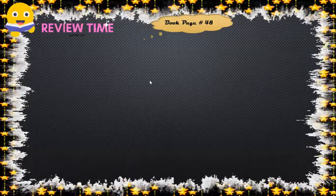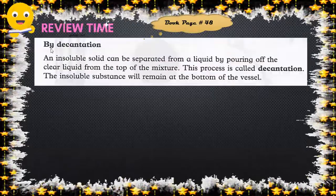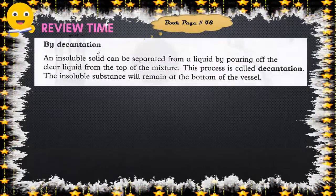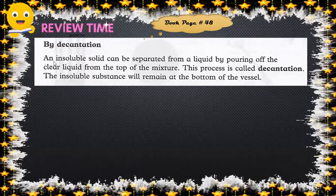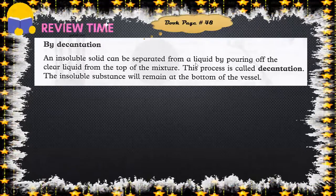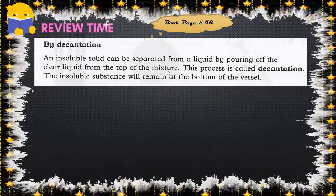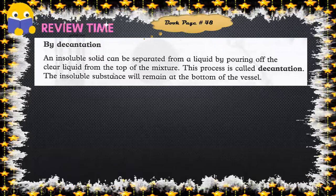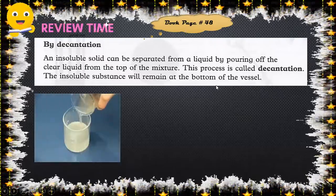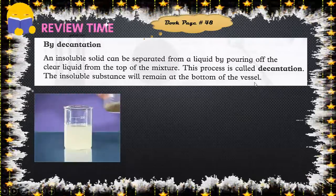By decantation: decantation means an insoluble solid can be separated from a liquid by pouring off the clear liquid from the top of the mixture. This process is called decantation. The insoluble substance will remain at the bottom of the vessel.